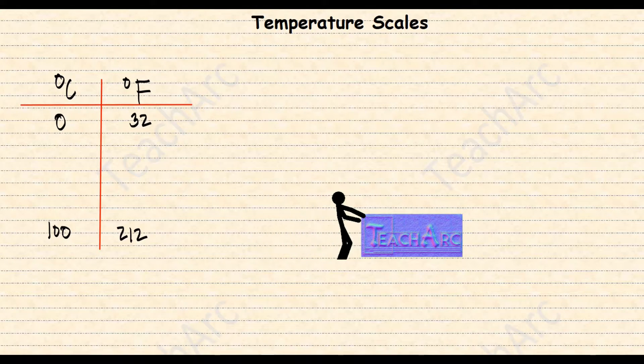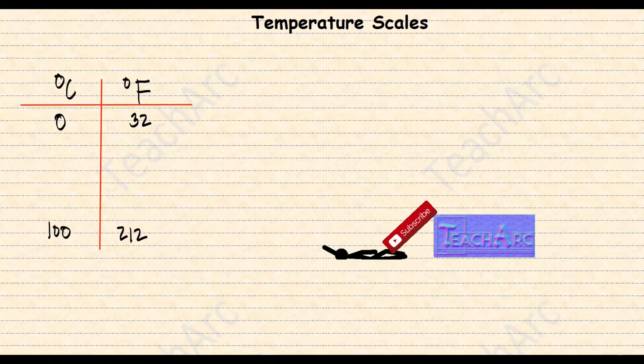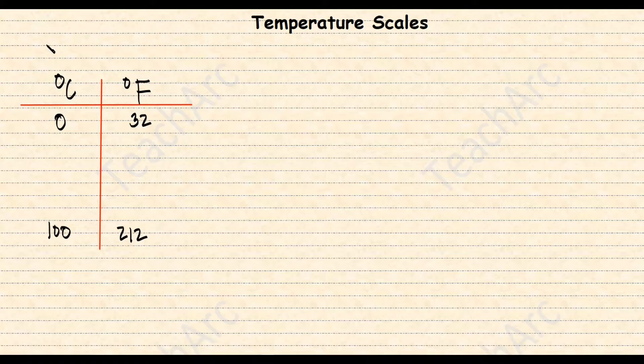Now look what we can get if we plot these values in an X and Y graph. Let's say that X is for the values in terms of Celsius and Y is for Fahrenheit. But first, to have a more prominent graph, let's include more points.